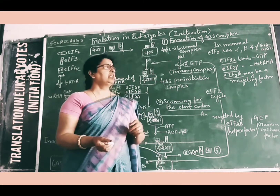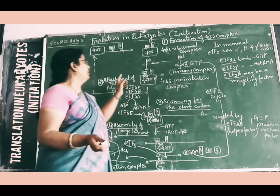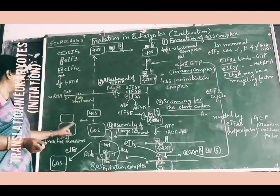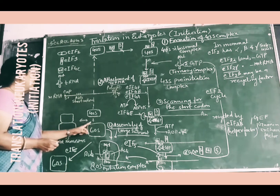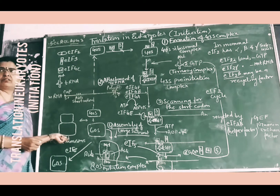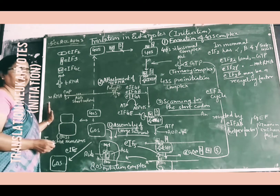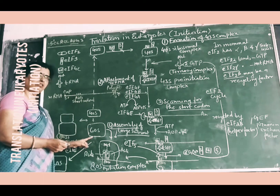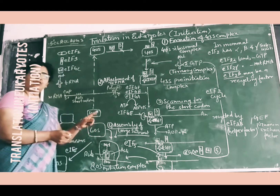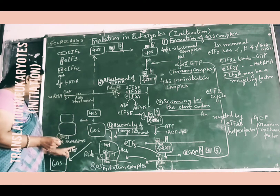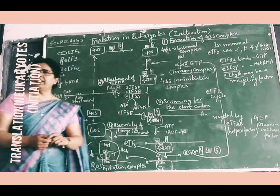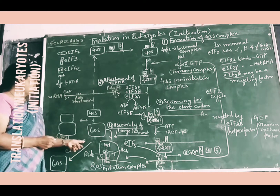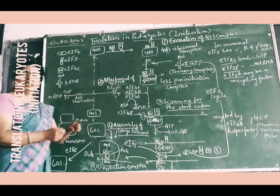We will discuss the initiation of translation in eukaryotes. Eukaryotic translation initiation starts with the involvement of ribosomal subunits. The 80S ribosome breaks into two subunits — 40S and 60S. These two subunits have a tendency to bind together, so a factor EIF6 binds with the 60S subunit to keep them separated.